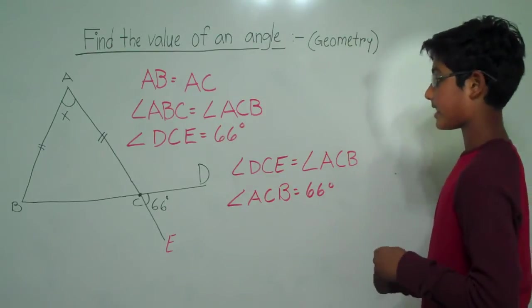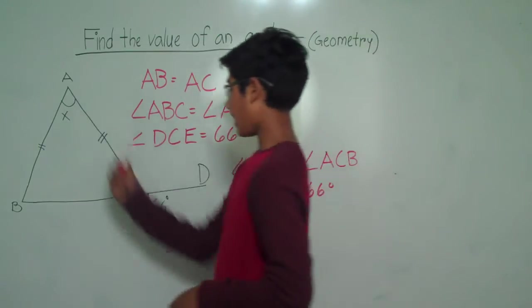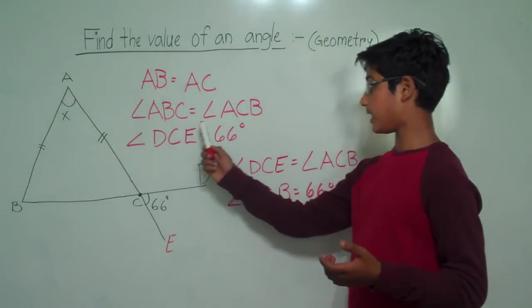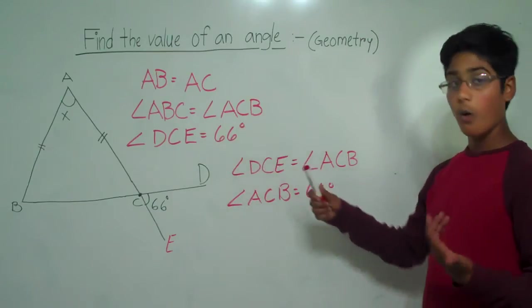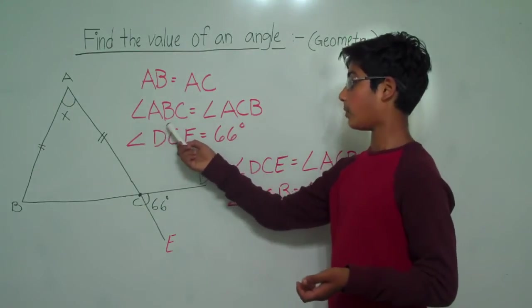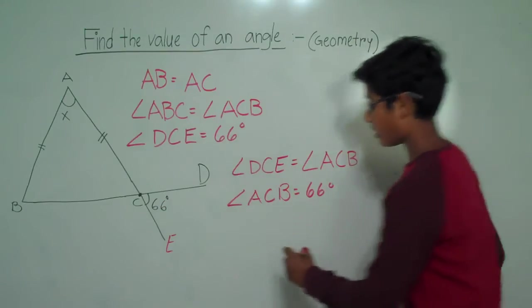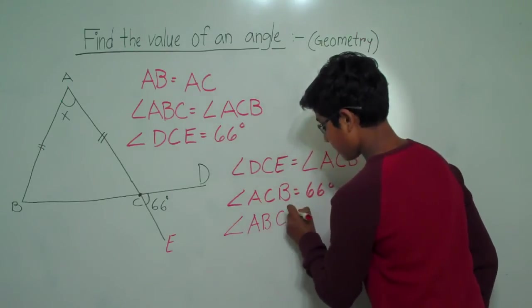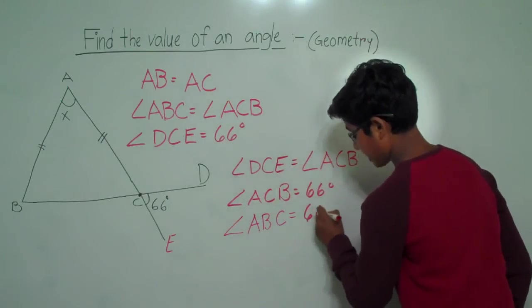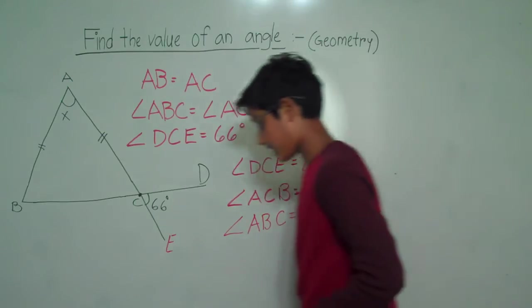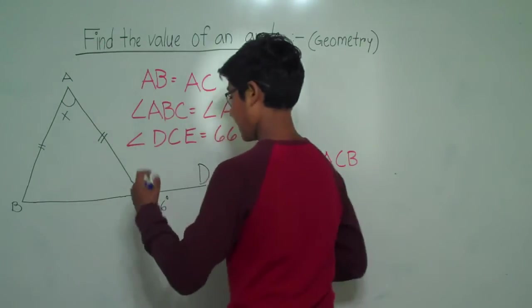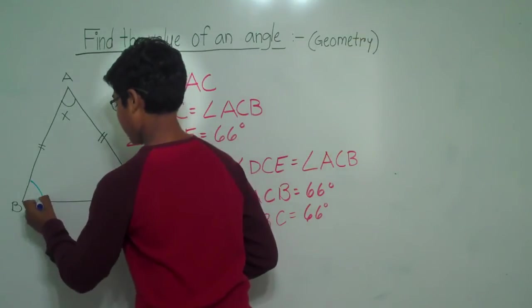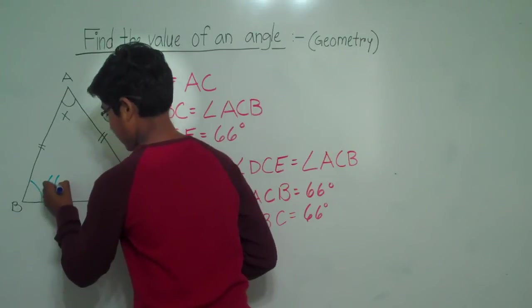This also means that since triangle ABC is an isosceles triangle, we know that angle ABC is equal to angle ACB. So angle ABC is also equal to 66 degrees. So angle ACB and angle ABC are both equal to 66 degrees.